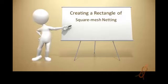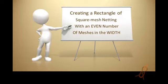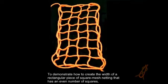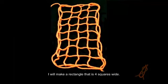Creating a rectangle of square mesh netting with an even number of meshes in the width. To demonstrate how to create the width of a rectangular piece of square mesh netting that has an even number of squares, I will make a rectangle that is four squares wide.